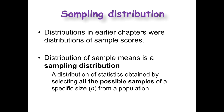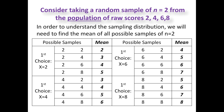Some of the distributions we talked about in previous chapters were distributions of sample scores. A distribution of sample means is a sampling distribution — we've been talking about single scores, now we're moving to groups of scores. This distribution of statistics is obtained by selecting all the possible samples of a specific size, n, from a specific population. Let's take a look at this chart.